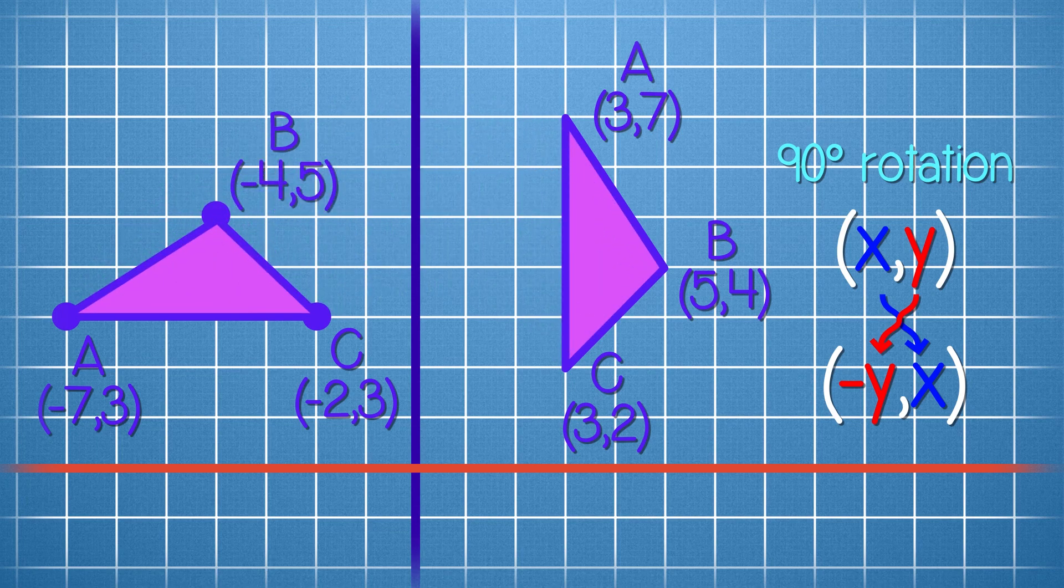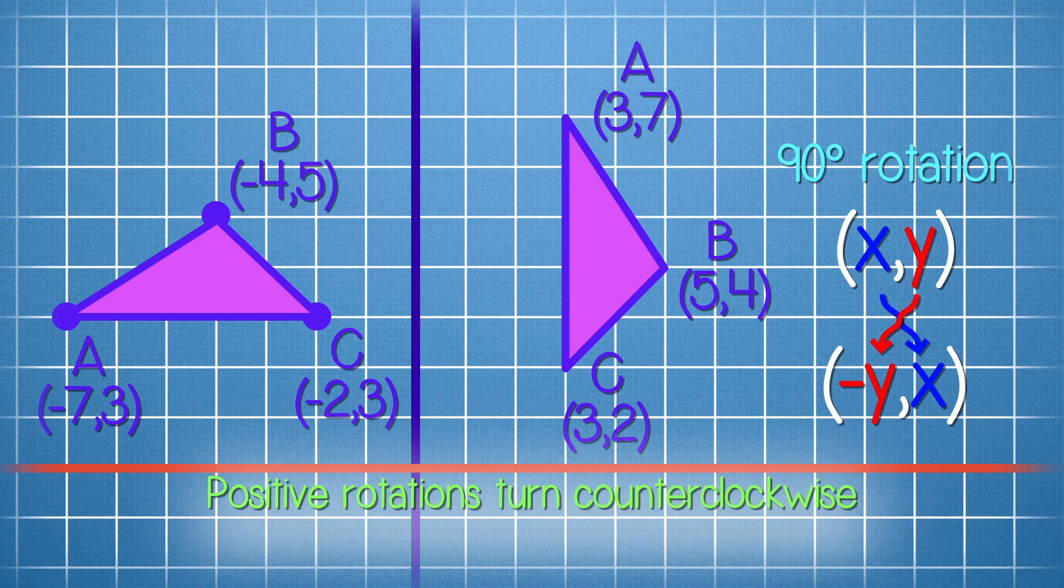Our triangle is rotated counterclockwise. This is an important rule. Positive rotations turn about a fixed point in a counterclockwise direction. Negative rotations go clockwise.